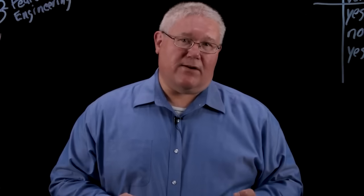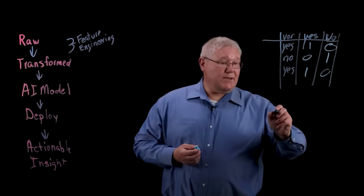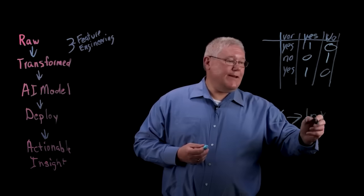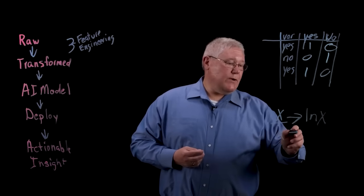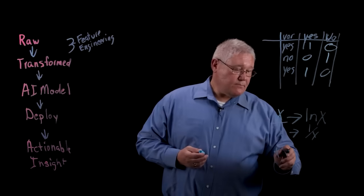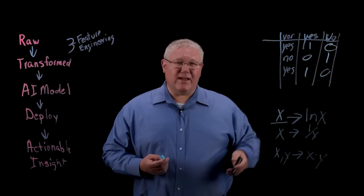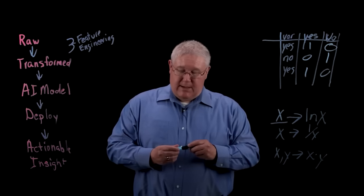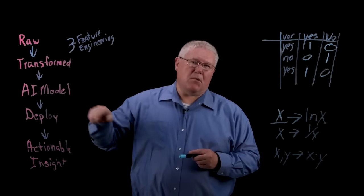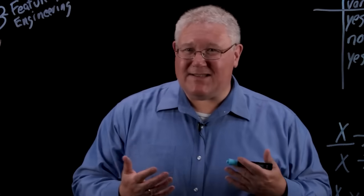And that's easier for a machine learning model or an AI model to consume. Another thing we'll do sometimes is we'll take an original variable and we'll transform it by just taking the natural log. Sometimes we'll take an original variable and we'll take the inverse. Sometimes we'll take two columns in the data set and we'll multiply them together into one new variable. These are all little things that you can do. And again, the point is that you're trying to transform your raw data so that it gives you a more predictive model.